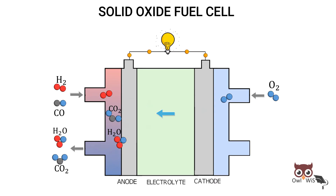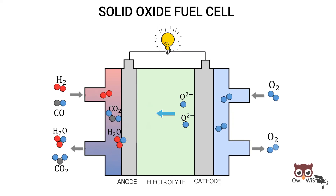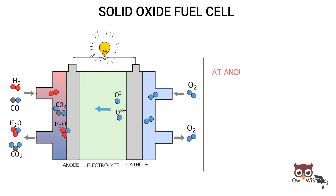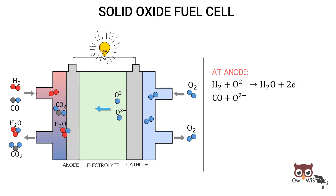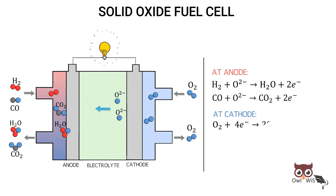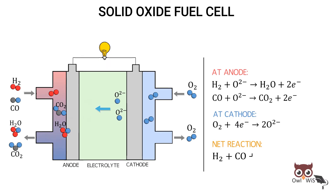As long as fuel and air are available, the fuel cells continue converting chemical energy into electrical energy. At the anode: hydrogen reacts with oxide ions to form water, releasing electrons; carbon monoxide reacts with oxide ions to form carbon dioxide, releasing electrons. At the cathode: oxygen accepts electrons to form oxide ions. The overall reaction is hydrogen and carbon monoxide reacting with oxygen to form water and carbon dioxide.